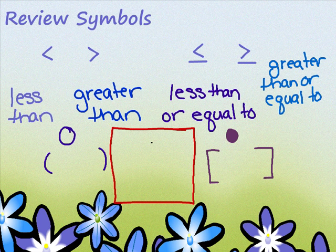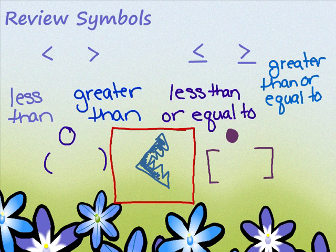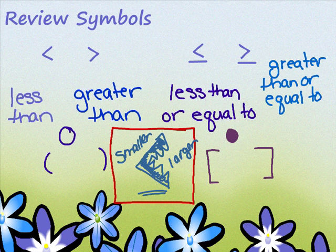Before we go on, I want to tell you something I learned when I was a kid to help me remember the less than or greater than symbol. My instructor told me to think of it as an alligator trying to eat the bigger number. So the number on the open side is the larger number, and the number on the closed side is the smaller number. That has really helped me over the years. Let's get started.